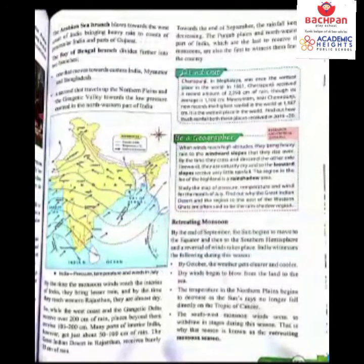When the south-west monsoon approaches the Indian coast, it divides into two branches: an Arabian Sea branch and a Bay of Bengal branch. The Arabian Sea branch blows towards the west coast of India, bringing heavy rain to the coast of Peninsular India and parts of Gujarat. The Bay of Bengal branch divides further into two branches — one that moves towards eastern India, Myanmar, and Bangladesh, and a second that travels up the northern plains and the Gangetic Valley towards the low pressure centered in the north-west part of India.